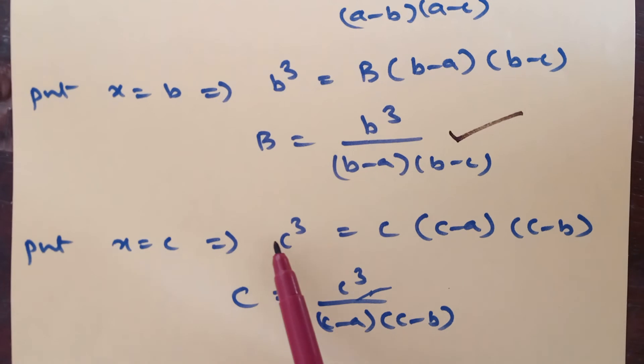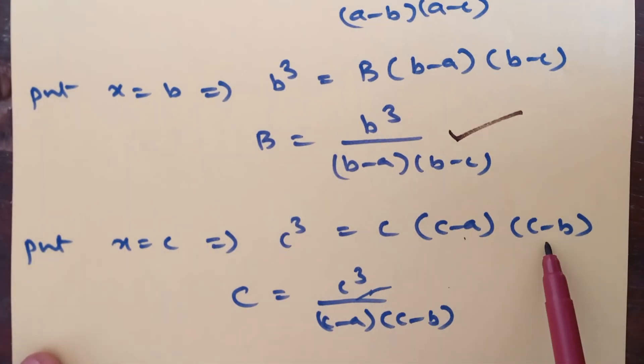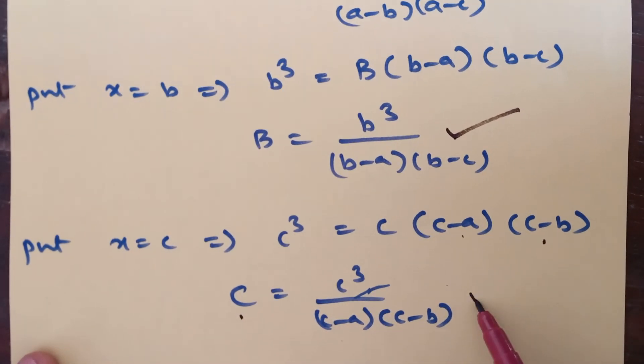Similarly substitute x is equal to c. Left side c cube, right side A and B becomes 0. C of c minus a, c minus b. Then from that C value is c cube by c minus a, c minus b.